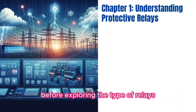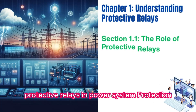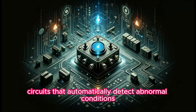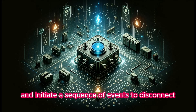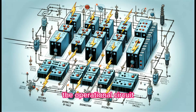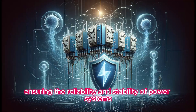Before exploring the type of relays, let's look at the role of protective relays in power system protection. Protective relays are pivotal components in electrical circuits that automatically detect abnormal conditions and initiate a sequence of events to disconnect the faulty portion from the rest of the operational circuit. They serve as critical safeguards, ensuring the reliability and stability of power systems.